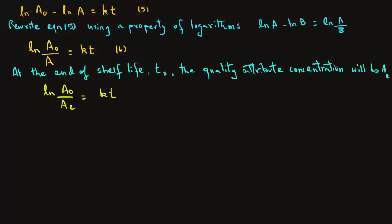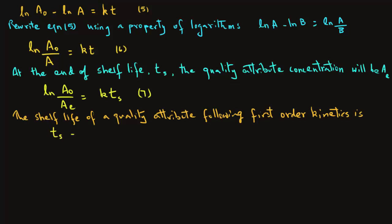The shelf life of a quality attribute that follows first-order kinetics, then, is TS equals natural log of A0 over Ae divided by K. So, this equation 8 gives us the shelf life for that quality attribute.